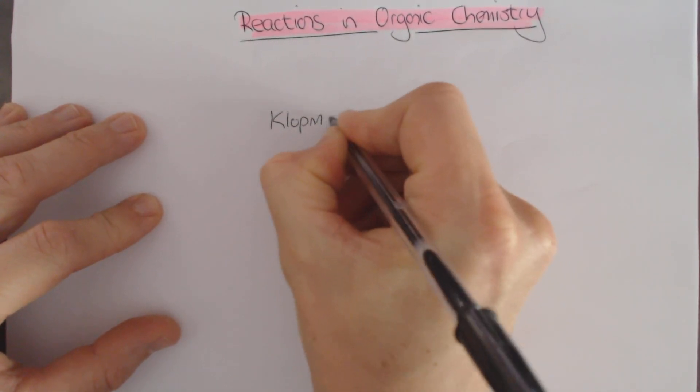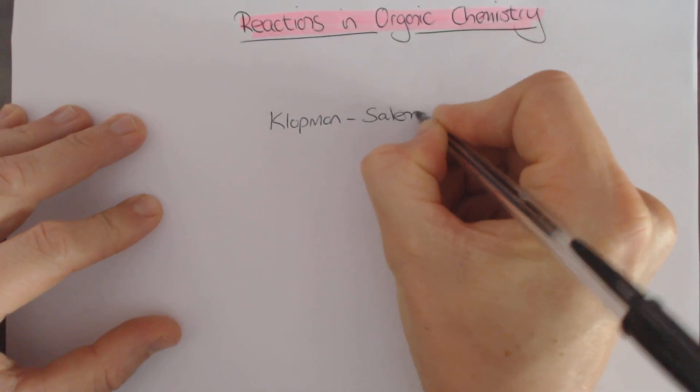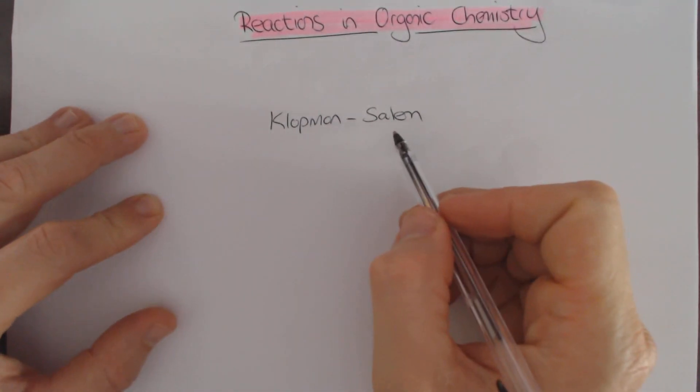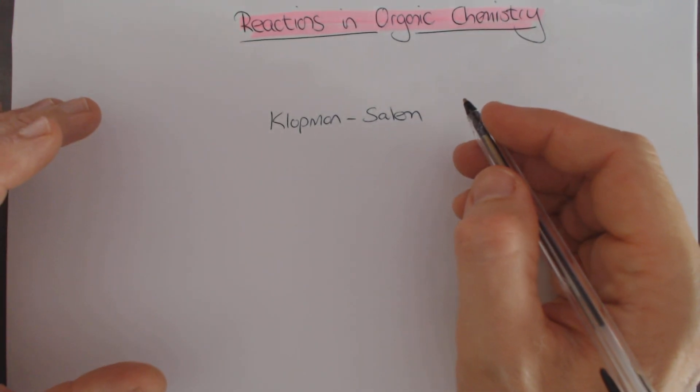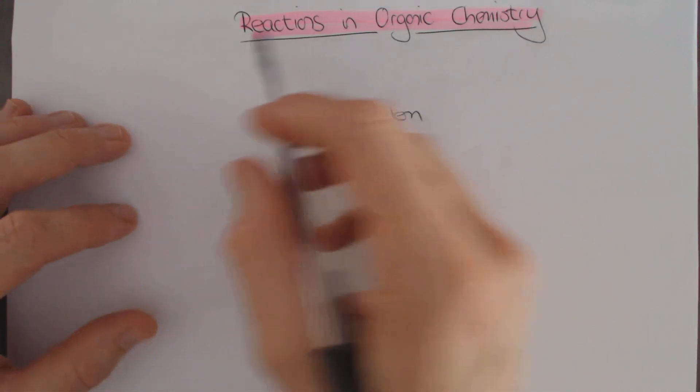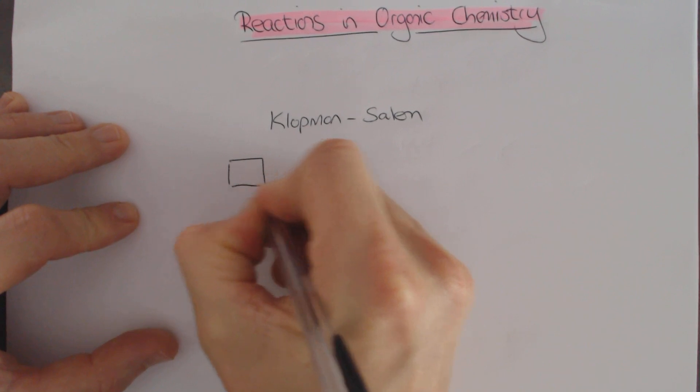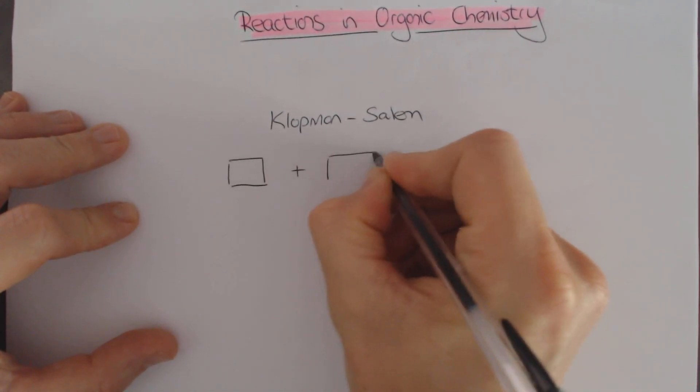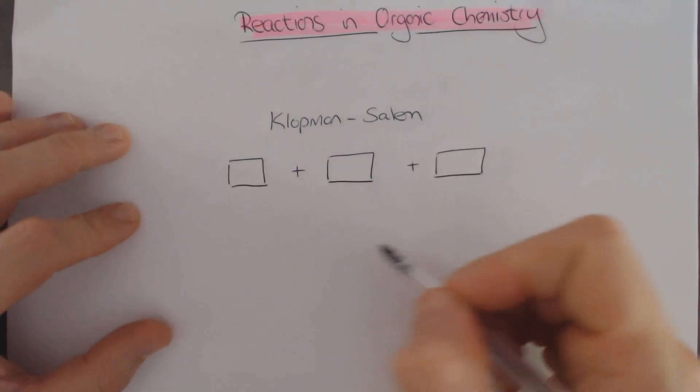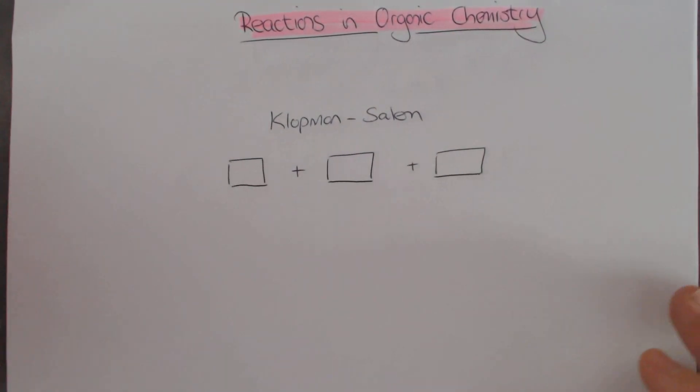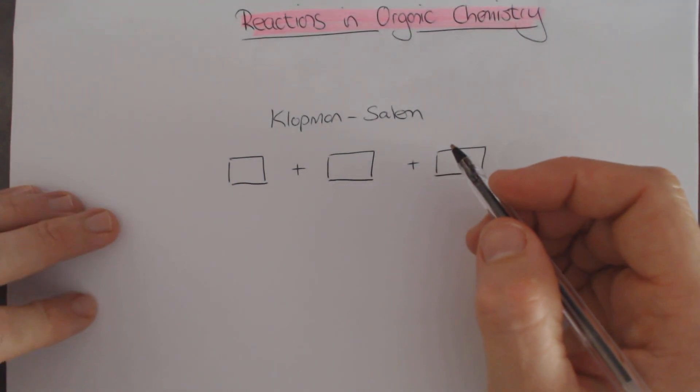It's called the Klopman-Salem equation, and essentially these two researchers came up with an equation which looked to try and unify all organic chemical reactions. This equation has three parts to it, components which can be calculated.